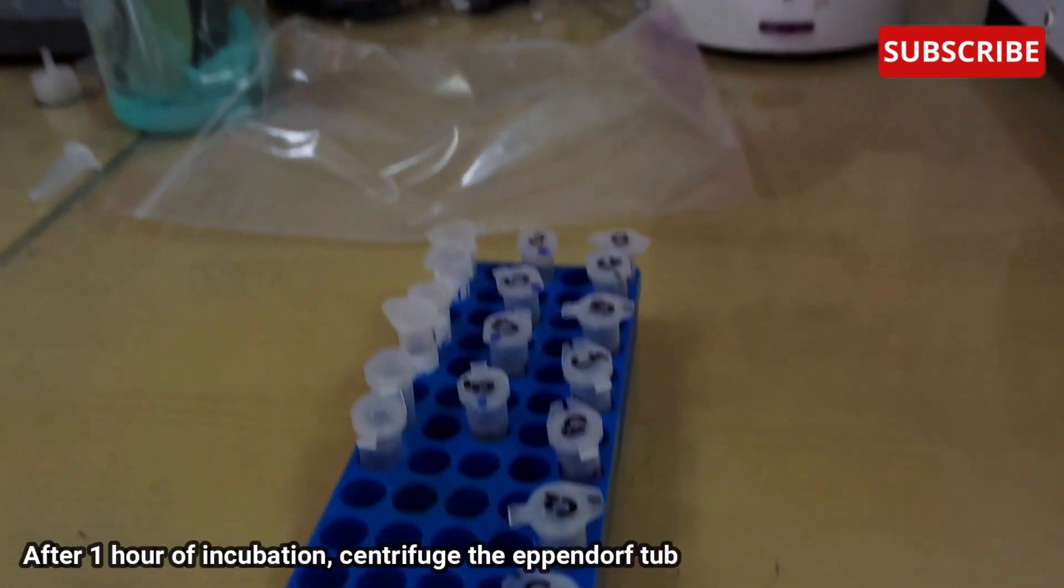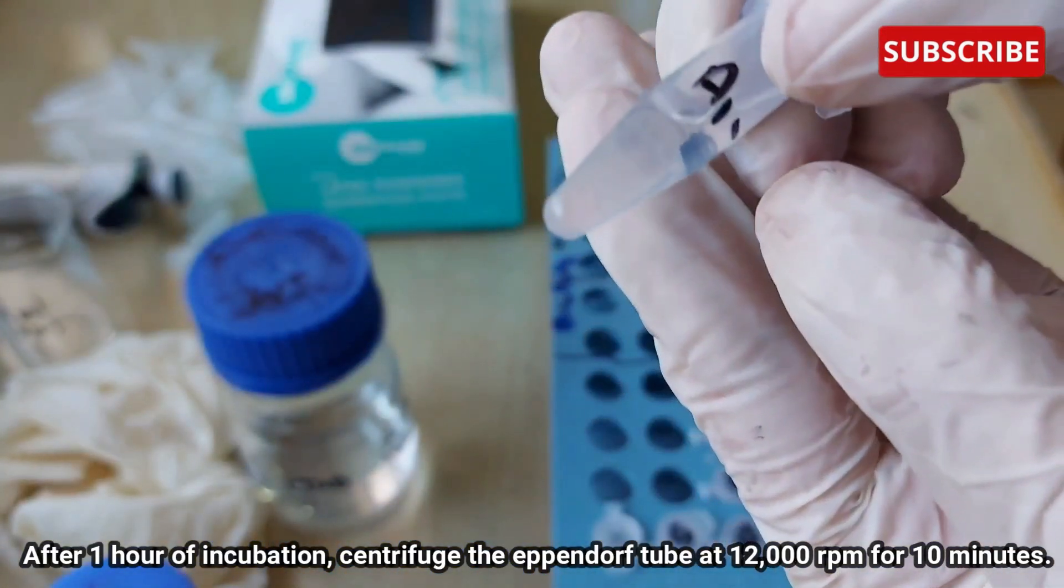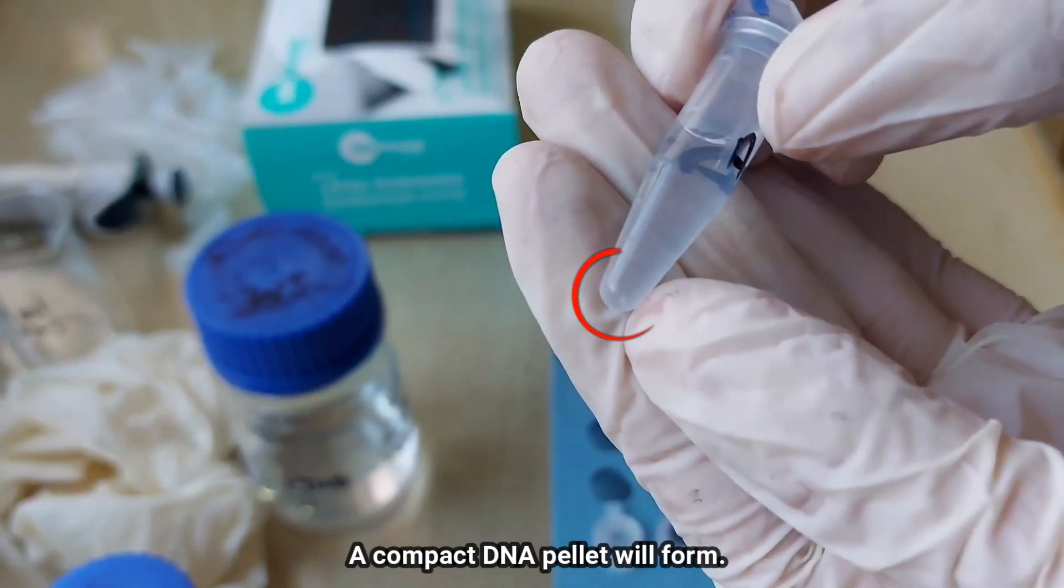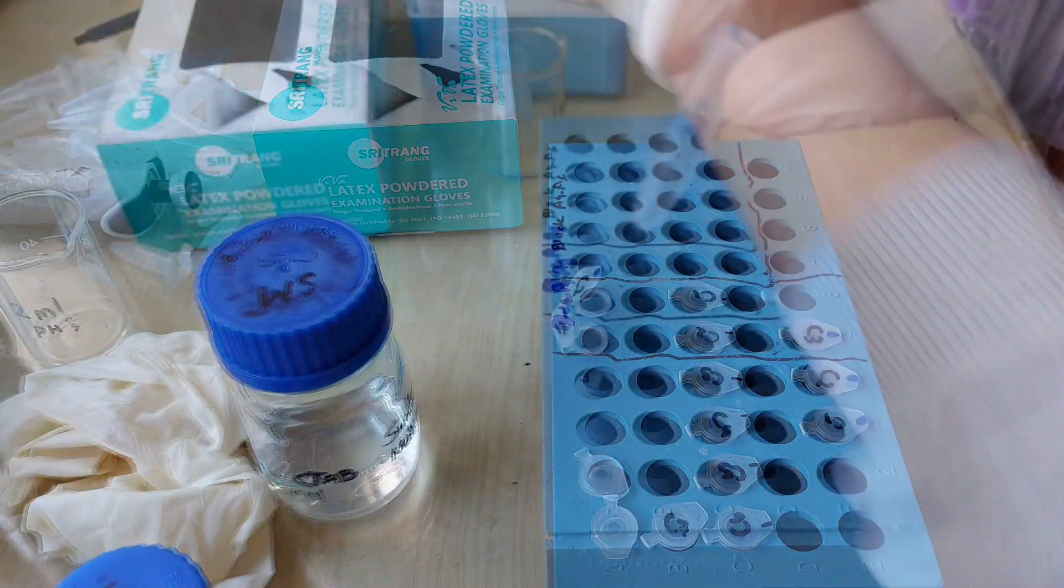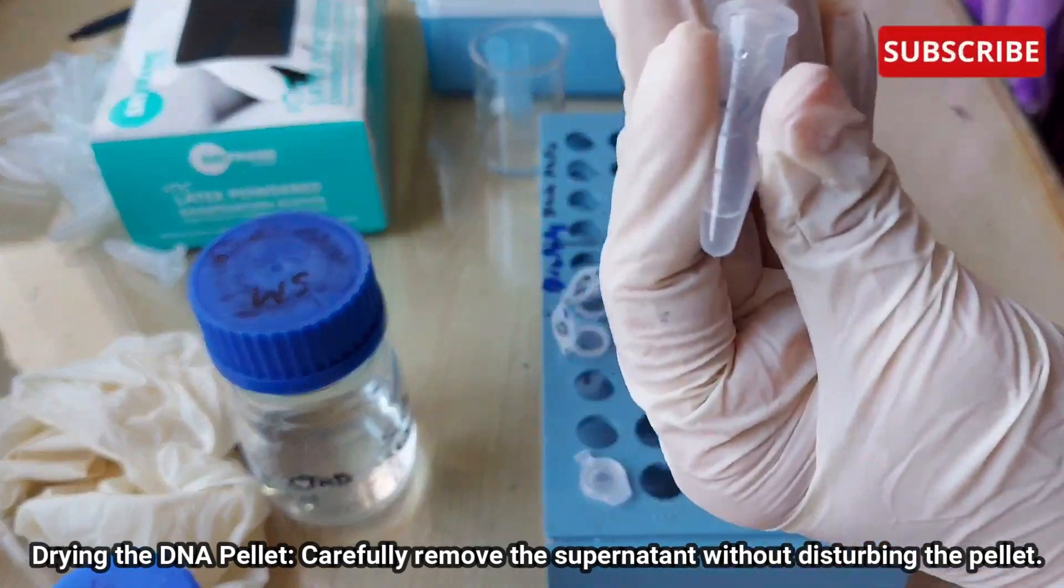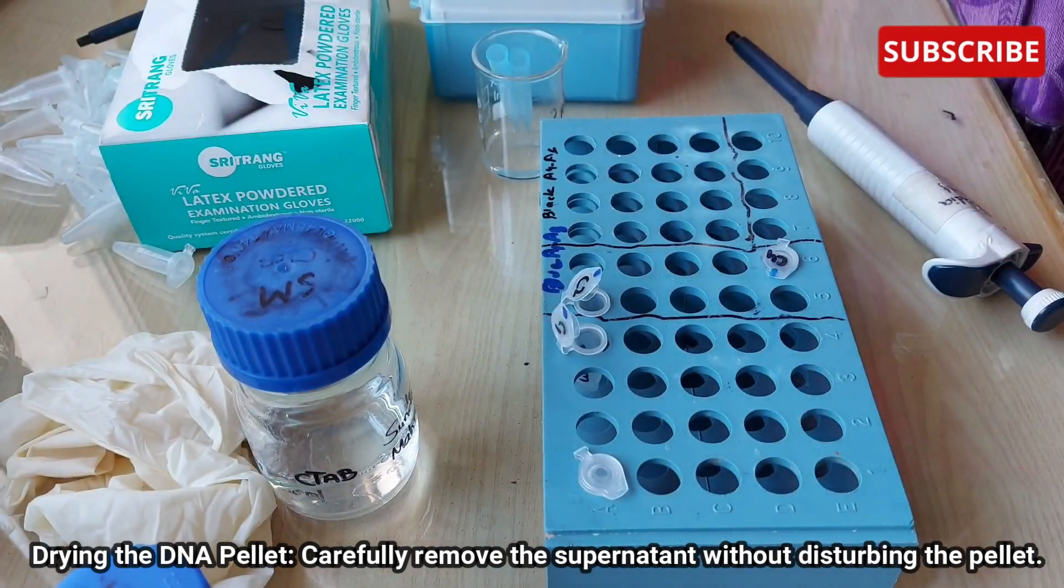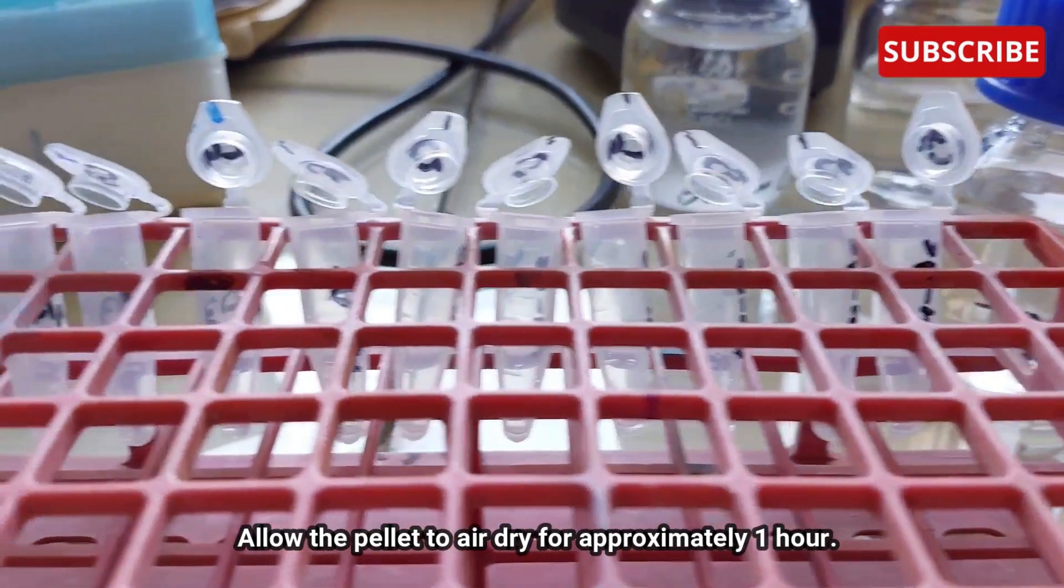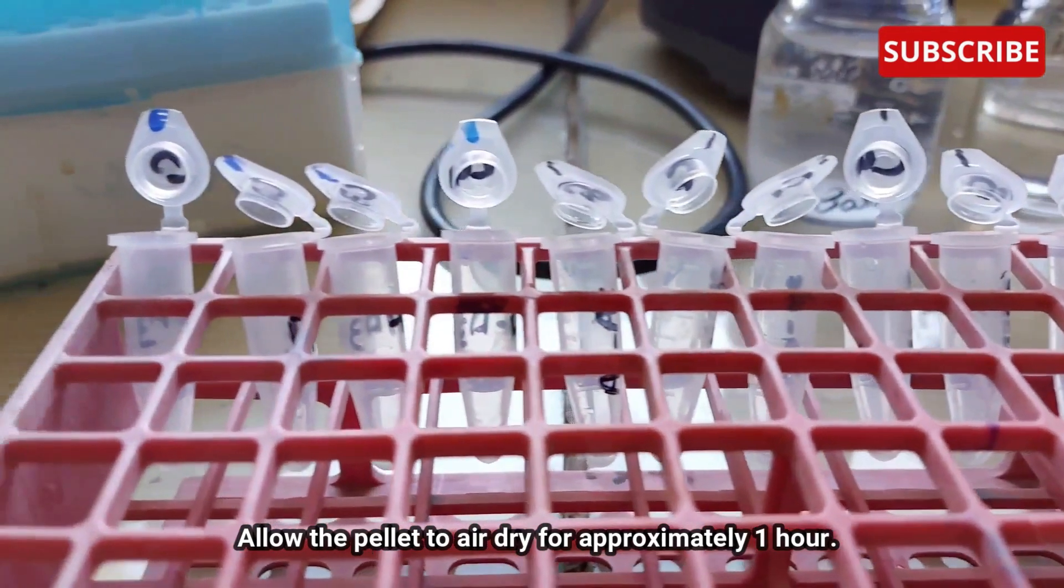After one hour incubation, centrifuge the eppendorf at 12,000 RPM for 10 minutes. A compact DNA pellet will form. Now for drying the DNA pellet, carefully remove the supernatant without disturbing the pellet. And then, allow the pellet to air dry for approximately one hour.